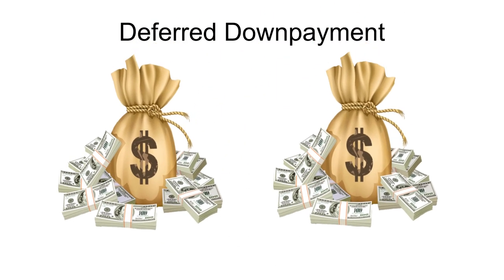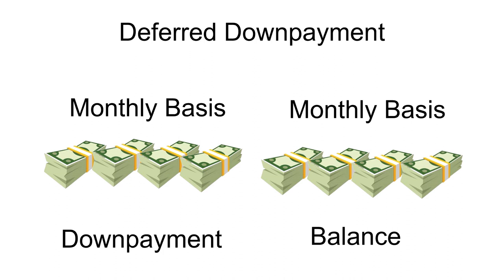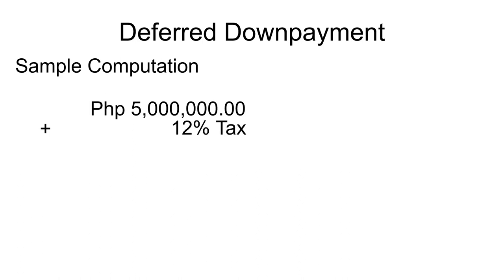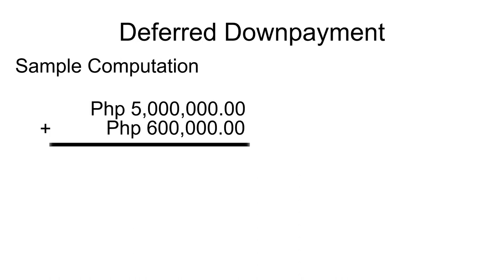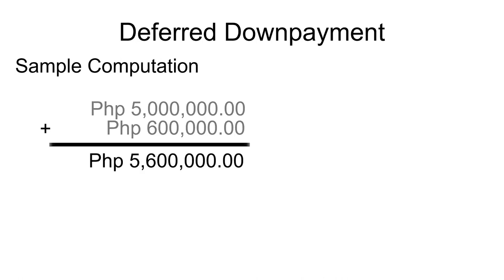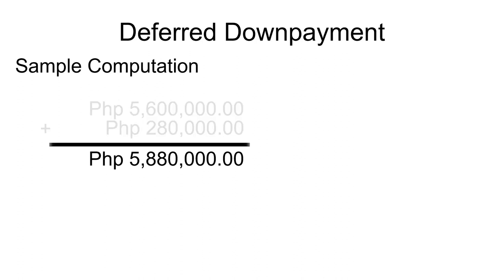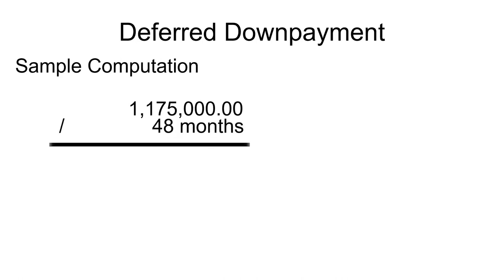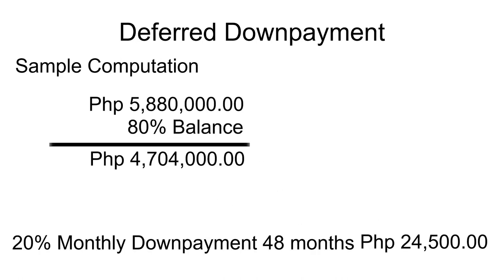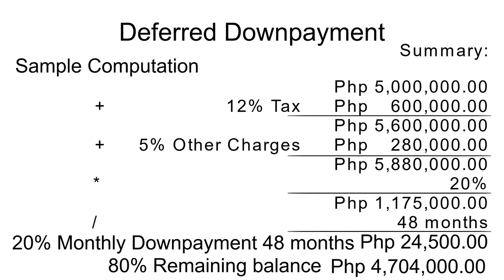Let's move on to our last payment term: deferred down payment. The deferred down payment is an option where you pay the down payment to the seller or developer on a date after you sign the contract. Usually with deferred down payment the developer does not give a discount. From the five million price, adding the 12% VAT of six hundred thousand, your total selling price is five million six hundred thousand. Adding the 5% charges, the total purchasing price is five million eight hundred eighty thousand. The 20% down payment is paid monthly at twenty-four thousand five hundred, and the remaining 80% — four million seven hundred four thousand — is through bank financing.